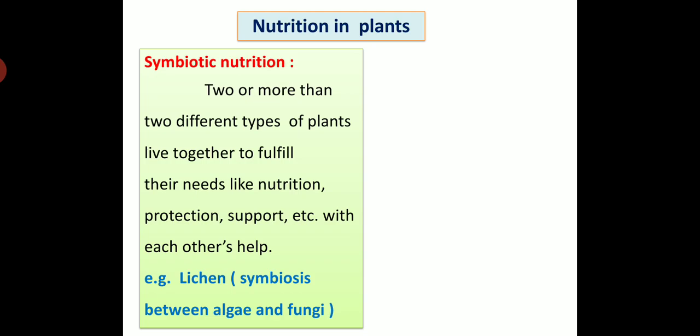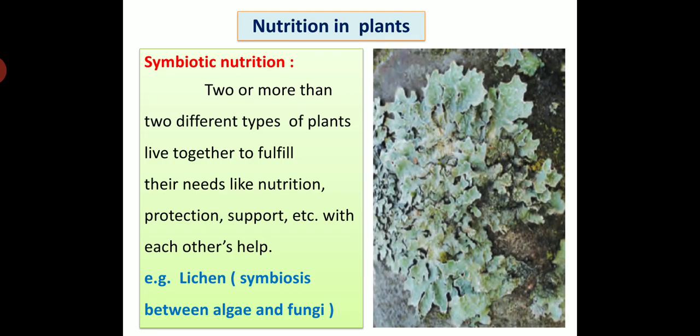Now we are going to see about nutrition in plants, some types of nutrition in plants. Symbiotic nutrition: two or more than two different types of plants live together to fulfill their needs like nutrition, protection, support, etc. with each other's help. For example, lichen. Lichen is an example of symbiotic nutrition. Lichen is symbiosis between algae and fungi. In picture you can see the plant of lichen.